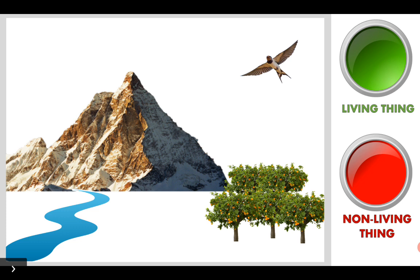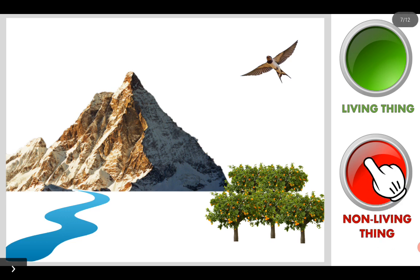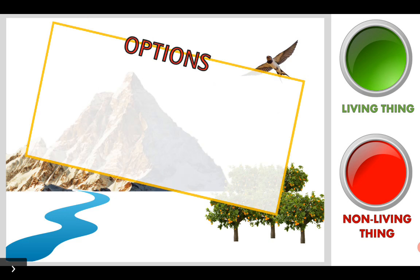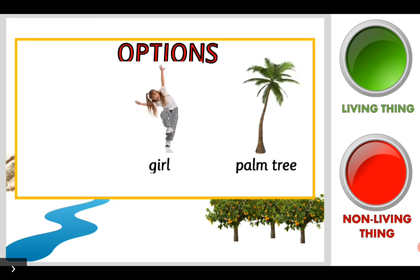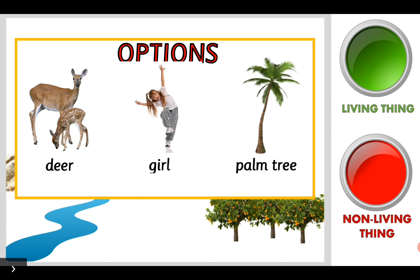We have two non-living things and six living things — one, two, three, four, five and six living things. What would you like to choose — living thing or non-living thing? I am going to choose living thing. A plant, a person and an animal. What would you like to choose? A deer, a girl or a palm tree?